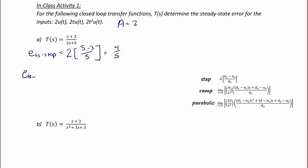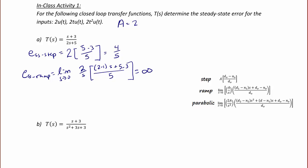Now let's do a ramp. For a ramp, we're going to have the limit as s approaches 0 of 2/s times (d1 - n1)·s + (d0 - n0), all over d0. That's (2 - 1)·s + (5 - 3) over 5. Since d0 is not equal to n0, this gives 2 divided by 0, which is infinity. So for a ramp, the steady state error is infinity.